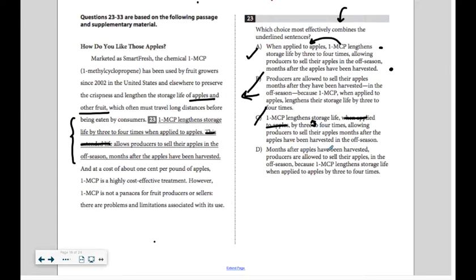Last one. Months after apples have been harvested, producers are allowed to sell their apples in the off-season because 1MCP lengthens storage life when applied to apples by three to four times. That actually brings in some redundancies.